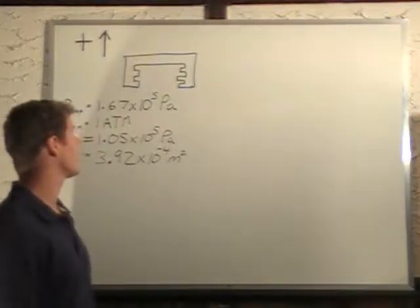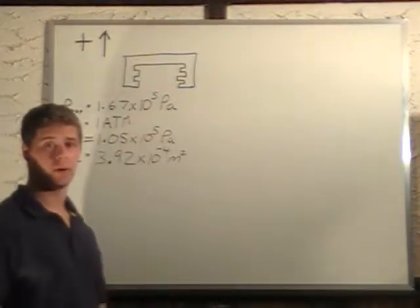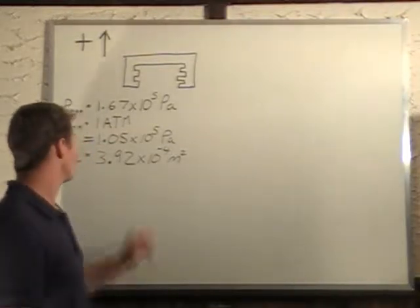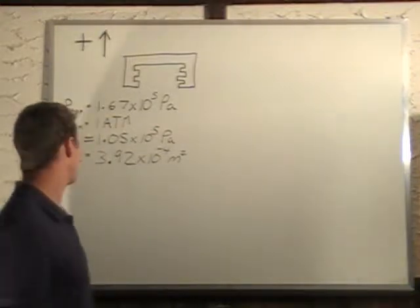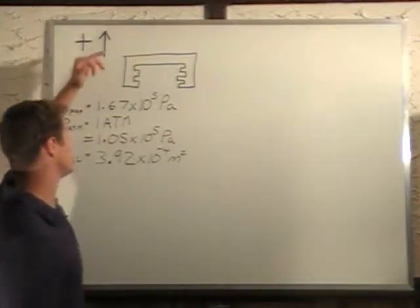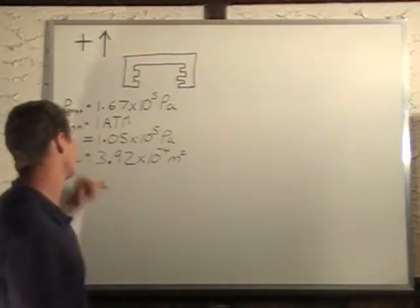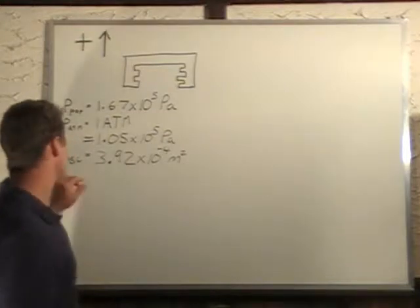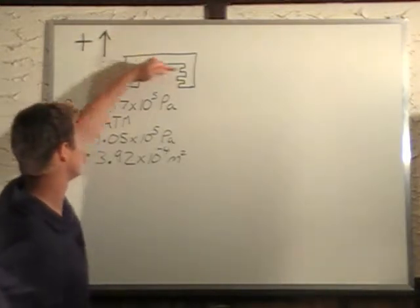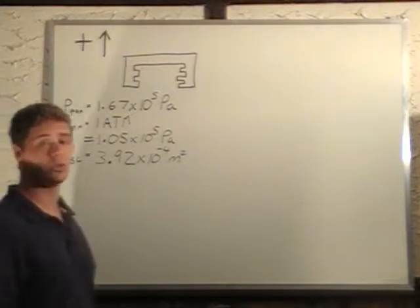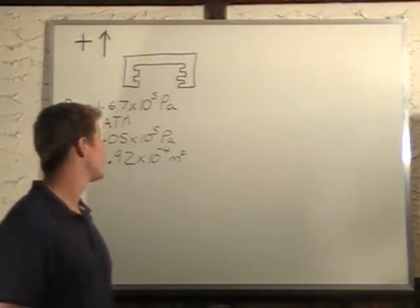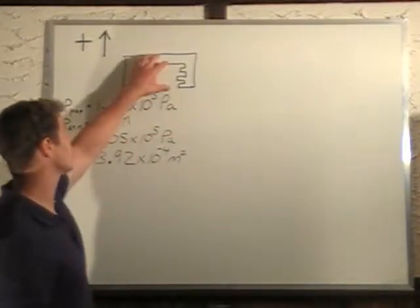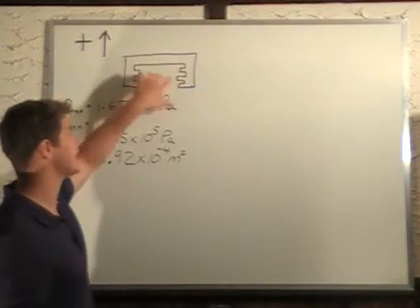In this problem, we have a bottle cap that's screwed on to a pop bottle. We're told that the pressure inside the pop bottle is 1.67 times 10 to the 5 pascals, and that the pressure of the atmosphere is 1 atmosphere, which is equivalent to 1.05 times 10 to the 5 pascals. The area of the pop bottle on the top and on the bottom is 3.92 times 10 to the minus 4 square meters. What we want to find is the force at which the bottle cap exerts in order for it to stay on.